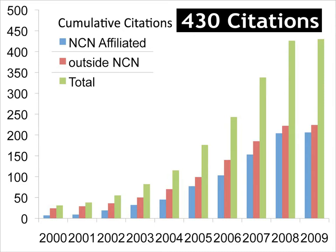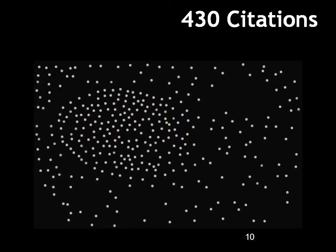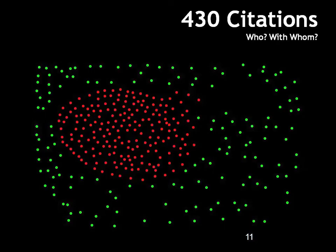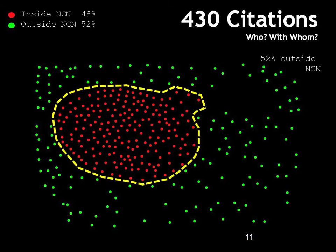We distinguish whether citations are inside or outside of the NCN. We have a sort of cosmos of citations — each dot is a paper. And you can ask: well, you guys have a lot of money, it's probably all the people that you gave the money to that cited, right? Not quite. This cosmos is colored so that red dots are people inside of the NCN, and green dots are papers from authors outside of the NCN. About 52% of these papers come from outside of the NCN, which is good.